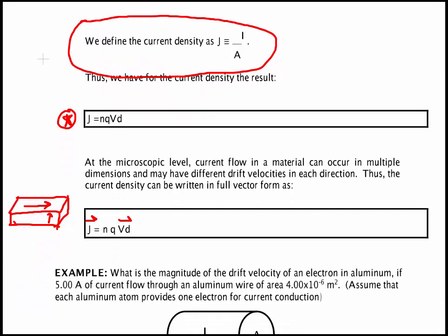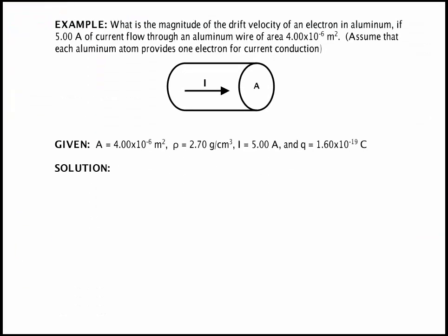Let's give an example of doing a problem like this. It says what is the magnitude of the drift velocity of an electron in aluminum if 5.00 A of current flow through an aluminum wire of area 4.00 times 10 to the minus 6 meters squared, assuming each aluminum atom provides one electron for current conduction. I got the density out of a table in the textbook but you can also get it out of the CRC or any other reference book. But you need that because you need this to find the number of atoms in a particular volume. And if I know the number of atoms I know there's one electron per atom so therefore I can find n.